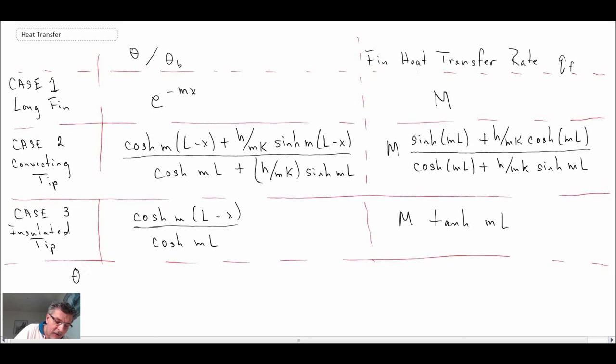Recall theta was T minus T infinity. We said M squared was h·P divided by k·AC, so the cross-sectional area, convective heat transfer coefficient, perimeter, and thermal conductivity of the fin. Theta B was equal to theta at zero, which is the temperature of the base minus the free stream temperature.